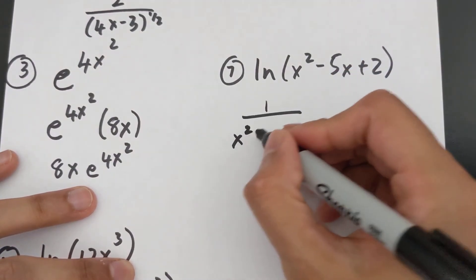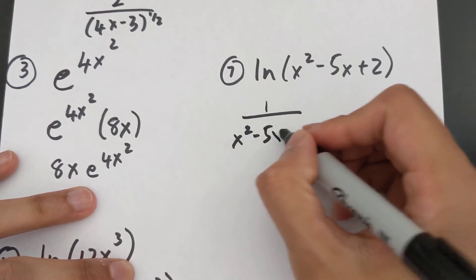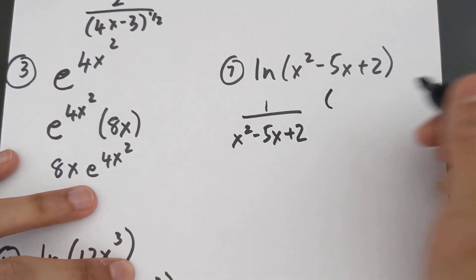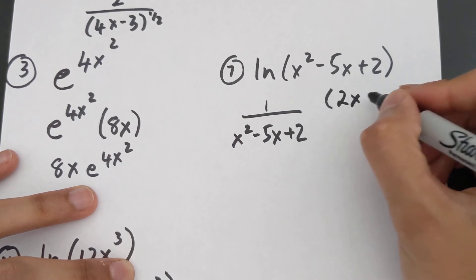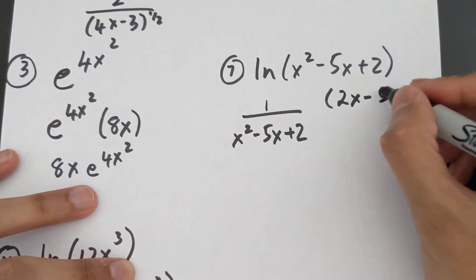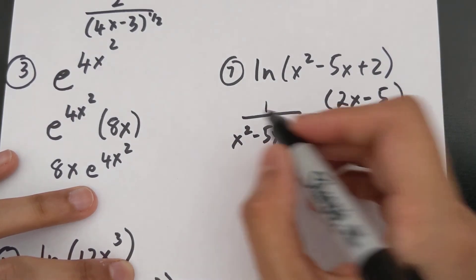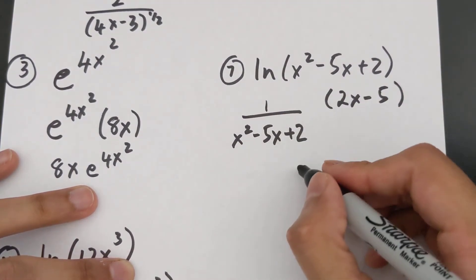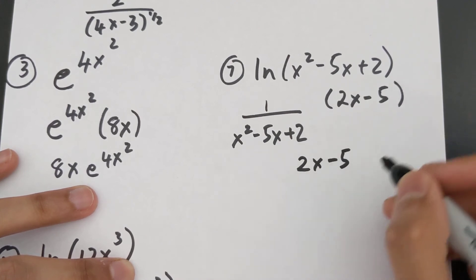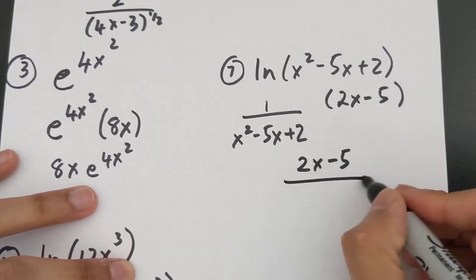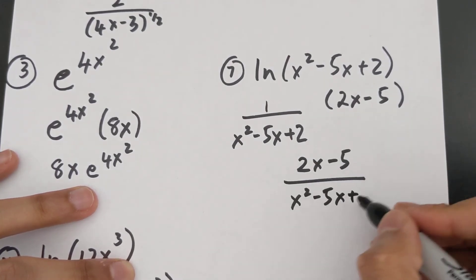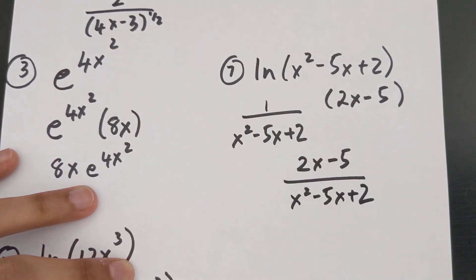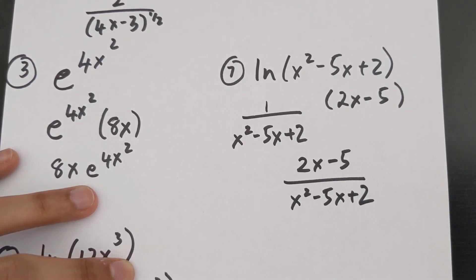The last one is a ln function: 1 over whatever's inside the bracket, multiplied by the derivative of the inside, which is 2x − 5. That simplifies to (2x − 5) over (x² − 5x + 2). That's basically an overview of the chain rule.